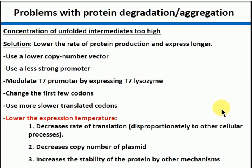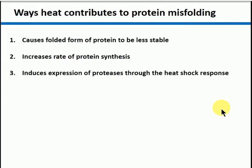That brings up the topic of heat and protein folding. There are multiple ways heat can contribute to protein folding, both direct and indirect. One is the standard way: you increase the temperature and the protein unfolds through entropic forces. The other thing is you increase the rate of protein synthesis. But there's another indirect method by which heat can decrease stability — through something called the heat shock response. This is a complicated regulation pathway, but basically the heat shock response in E. coli senses unfolded proteins through the molecular chaperones of the cell. When the molecular chaperones get overwhelmed, it feeds back and turns on the production of proteases and chaperones. Chaperones will help your protein fold, but the proteases are the concern.